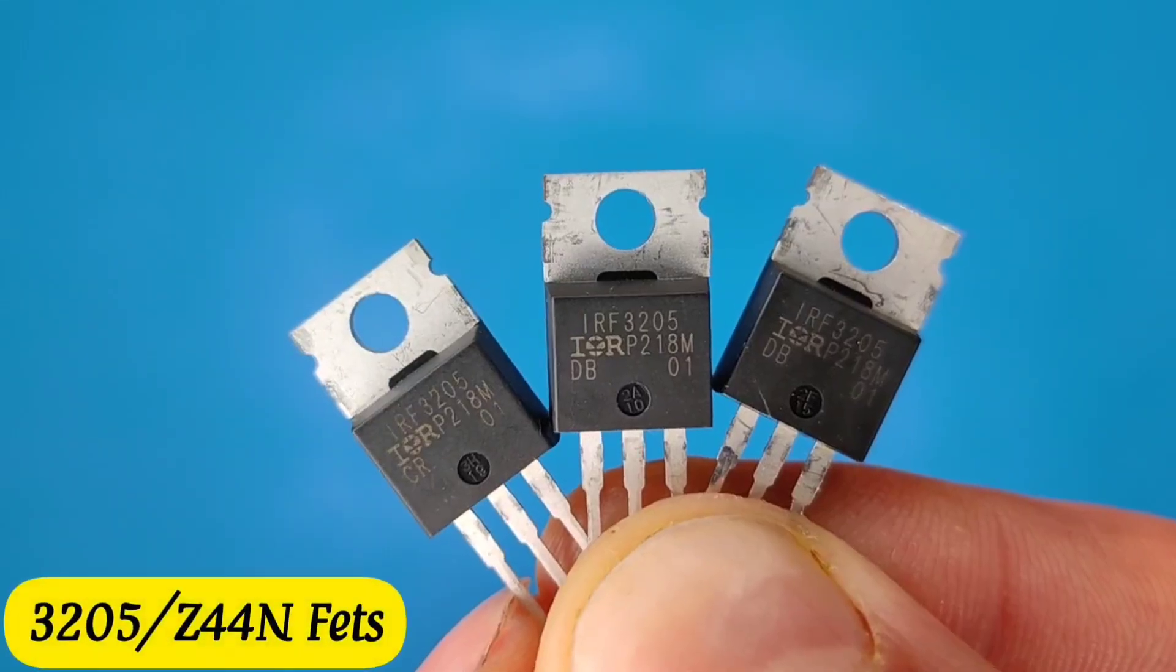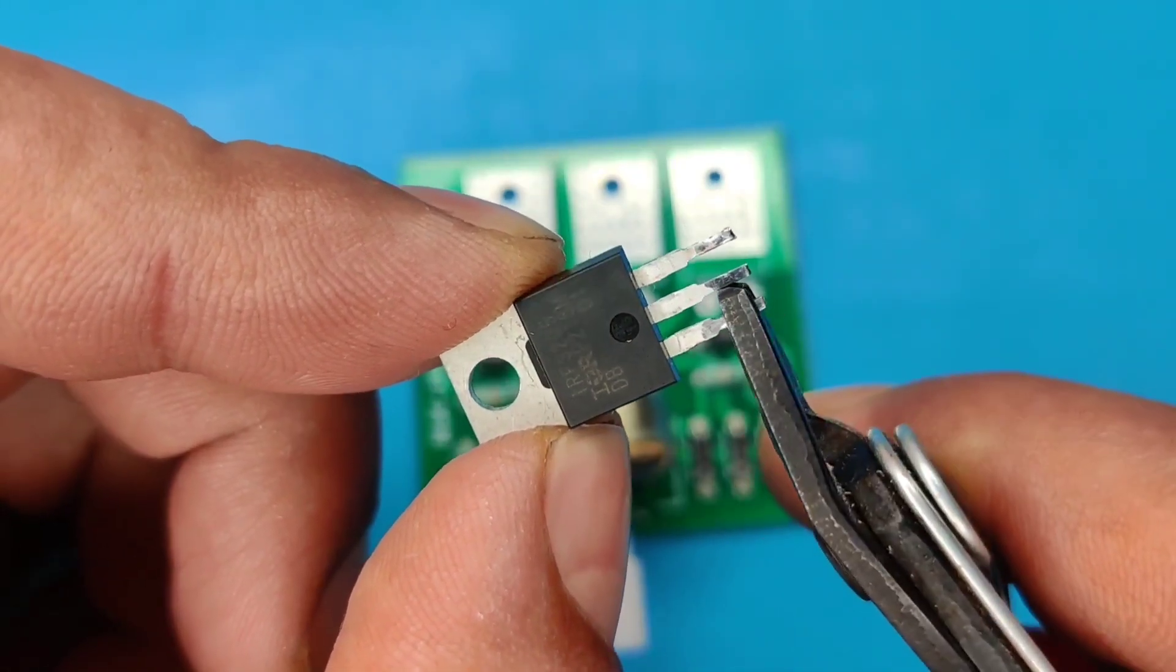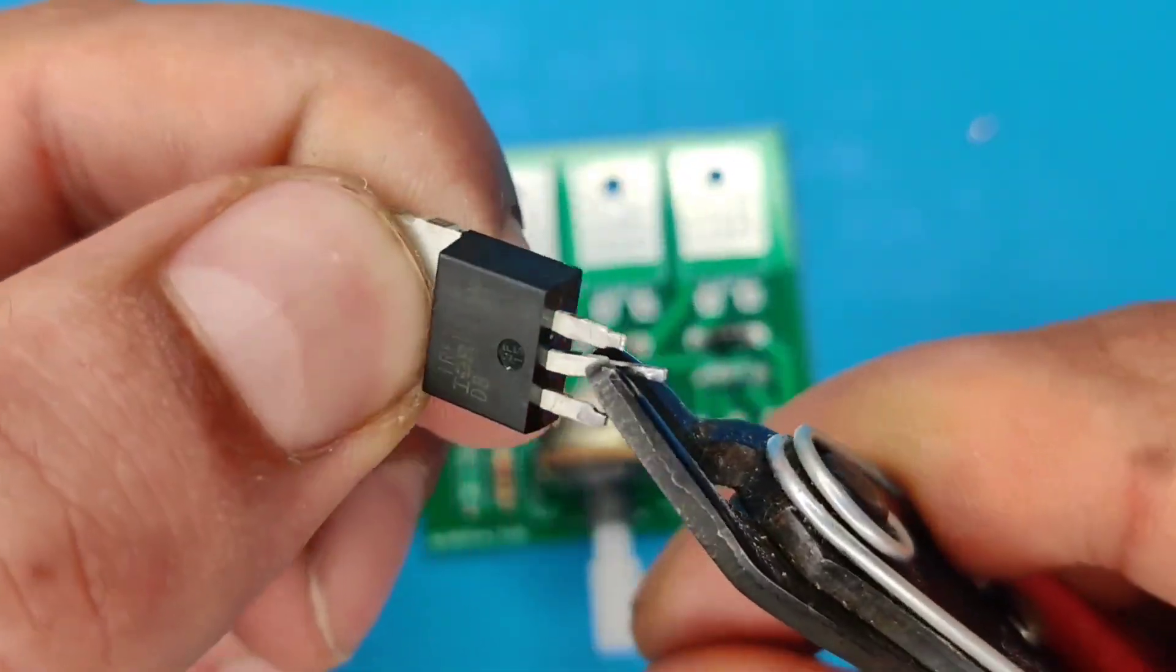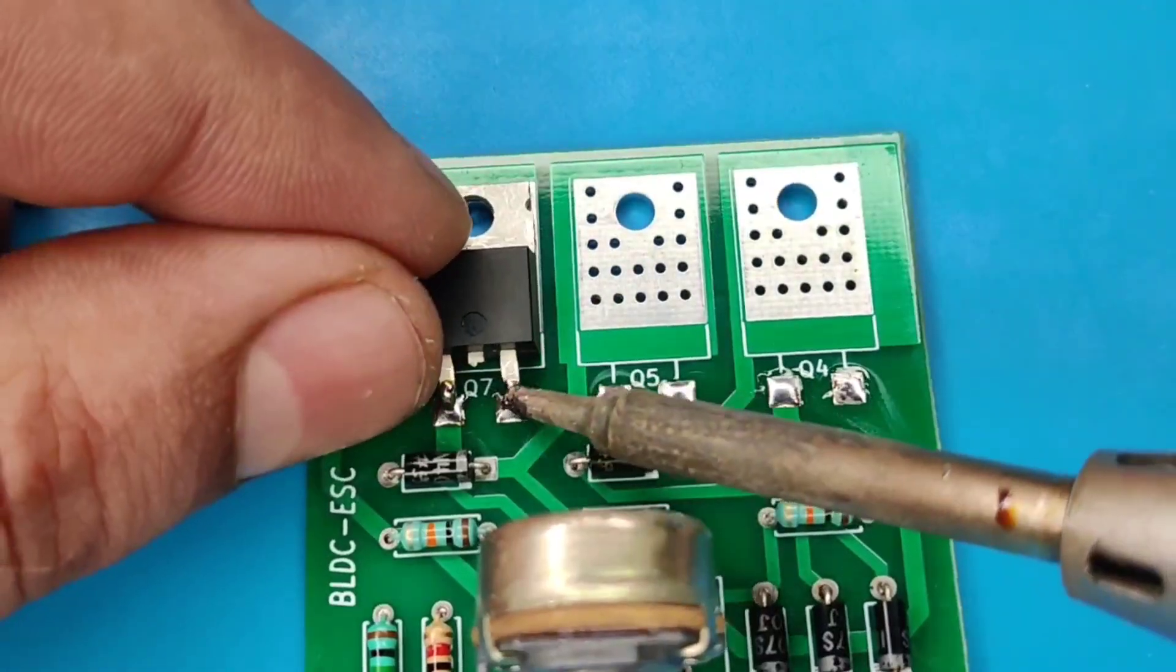This time I used 3205 MOSFETs. Trim the MOSFET pins like this and solder these MOSFETs at its place.